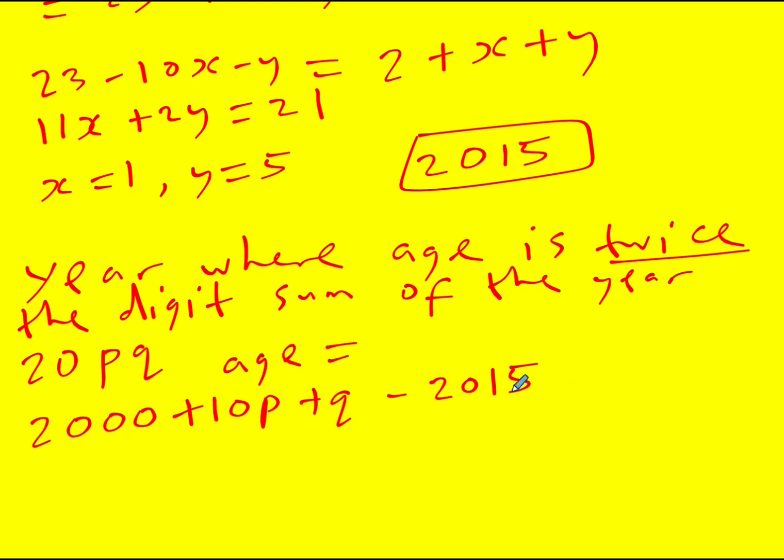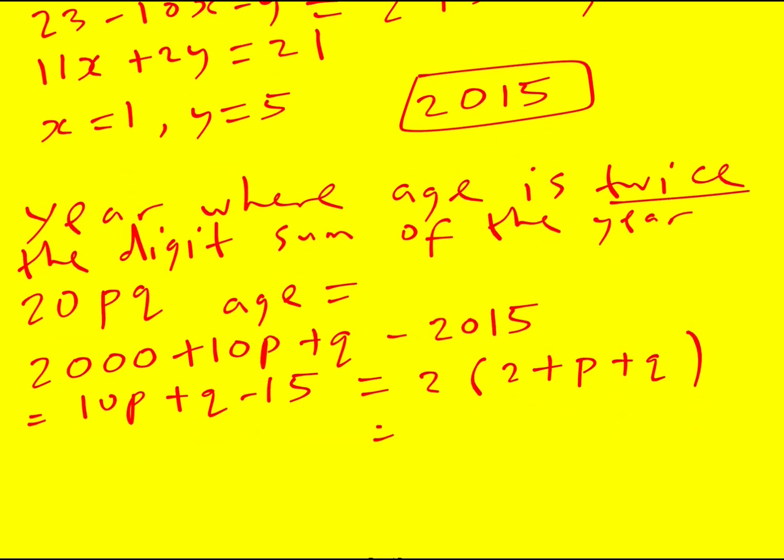Which is then equal to 10p plus q minus 15, and this is twice the sum of the year. Okay, so it's going to be twice, 2 plus 2 plus p plus q, which is 4 plus 2p plus 2q. I can rearrange this again so it's going to be 8p minus q is equal to 19.